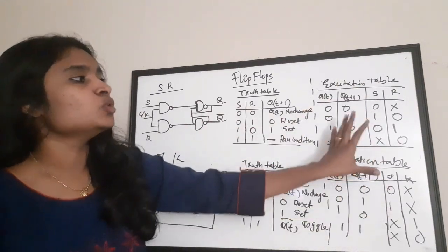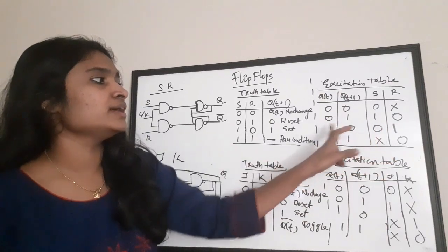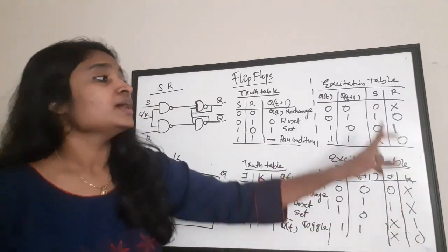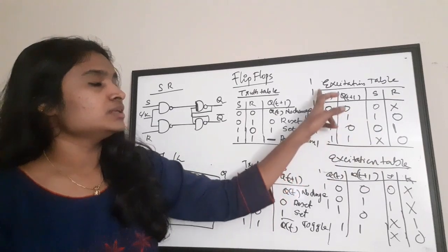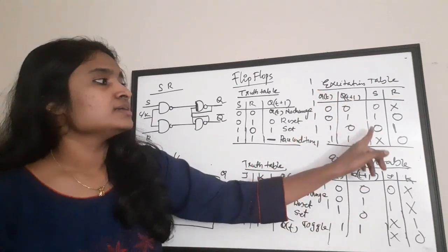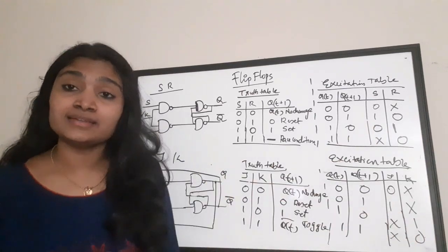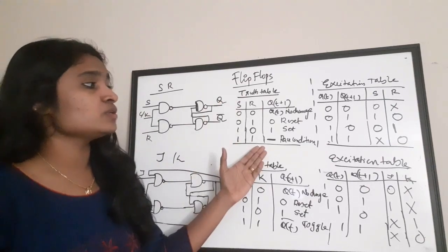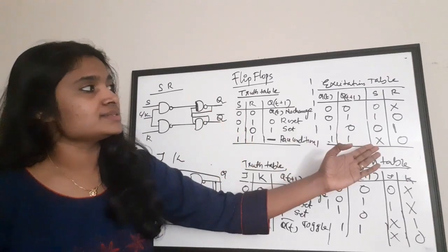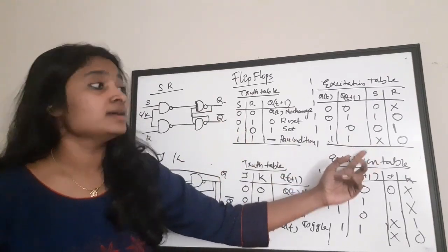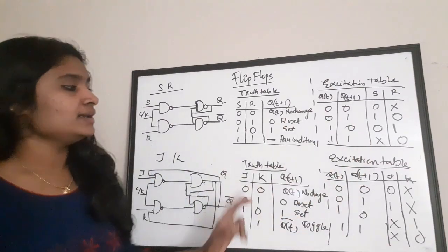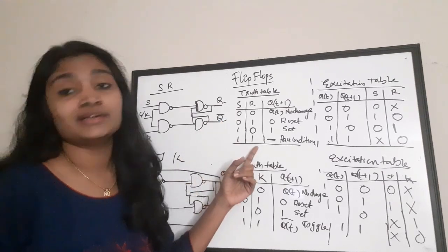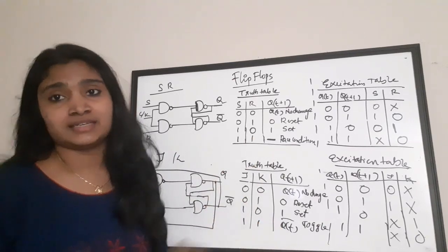So the excitation table of JK differs from SR only for the 0,1 and 1,0 combinations. For QT=0, QT+1=1: SR has S=1, R=0, while JK has J=1, K=don't care. For QT=1, QT+1=0: SR has S=0, R=1, while JK has J=don't care, K=1. That is how you can study the truth table and excitation table very fast. If you know the SR flip-flop truth table, you can write its excitation table and then derive the JK tables — the truth table is 99% the same, only the 1,1 condition differs.